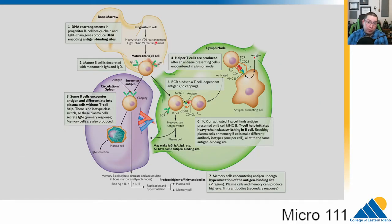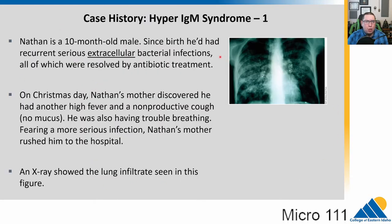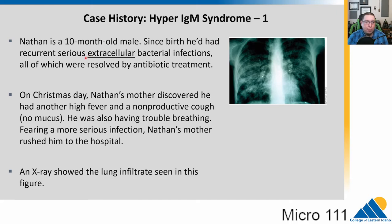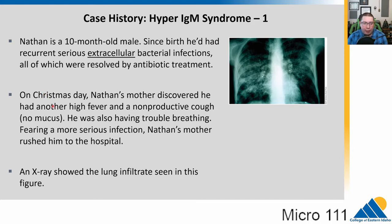Now let's look at another case study with an issue in the humoral immune system. We have Nathan — he's 10 months old, and from birth he has been suffering from recurrent extracellular bacterial infections. The extracellular nature suggests a humoral issue. They've had to treat these with antibiotic therapies, but the longer you do that, the more likely antibiotic resistance is to evolve. On Christmas Day, his mother finds he has another fever, a non-productive cough with no mucus or phlegm, and he's having trouble breathing.